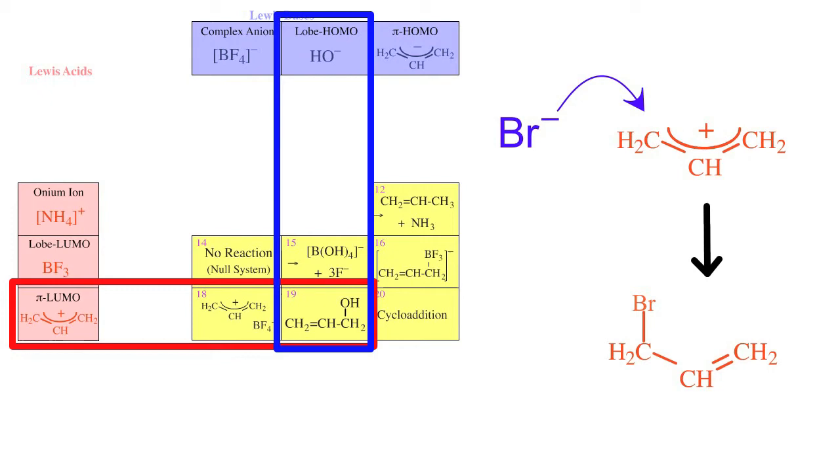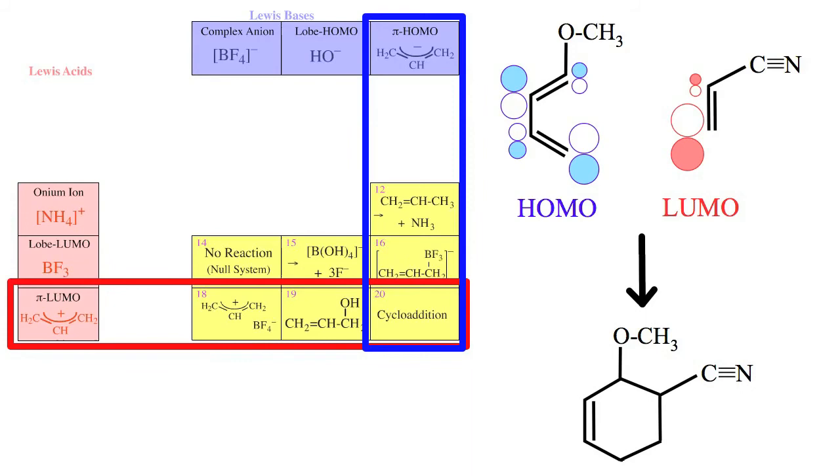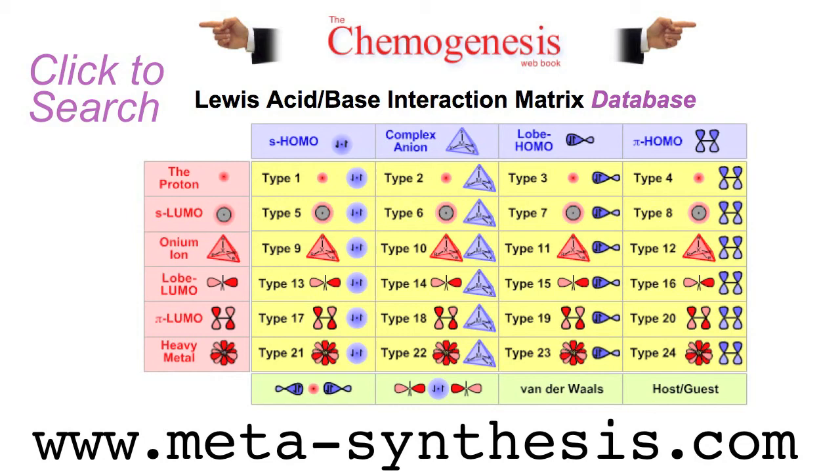A very rich type of complexation chemistry occurs between pi HOMO Lewis bases and pi LUMO Lewis acids: Diels-Alder type cycloaddition chemistry. You can see more on the Chemogenesis website. There is a click-to-search Lewis acid-base interaction matrix where you can explore this chemistry in more detail.